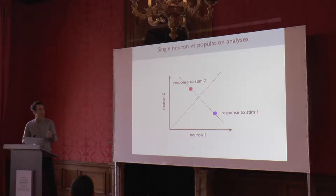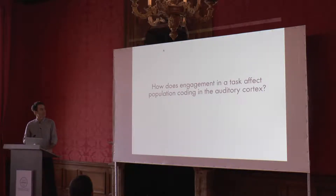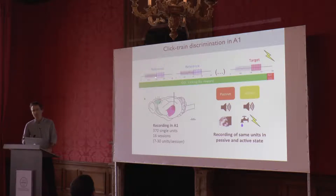The big question we wanted to address is how does engagement in a task modify population coding in the auditory cortex? I'm going to focus on a specific go-no-go task in which ferrets had to discriminate click trains of different rates. There was first a silence, followed by a noisy stimulus that had no behavioral relevance, and then came a click train. The animal basically had to decide whether this was a fast or a slow click train.